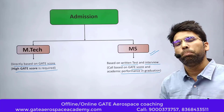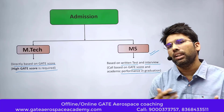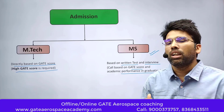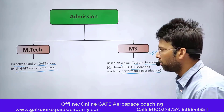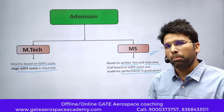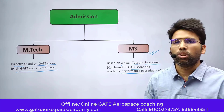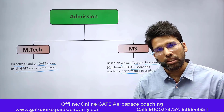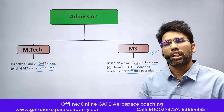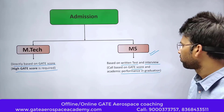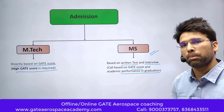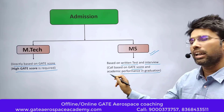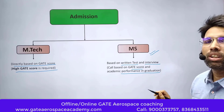For the written test and interview, you have to prepare any one subject of your interest and mathematics. For example, if you are interested in aerospace structures, you will have to study the fundamentals of structures and mathematics. If you are applying for aerodynamics, you have to study the fundamentals of aerodynamics, gas dynamics, fluid mechanics, and mathematics. If applying in mechanical department for thermal science, you have to study thermodynamics, turbomachinery, and mathematics. So mathematics is compulsory along with one subject of your interest. If you have a low GATE score, you can apply for MS.